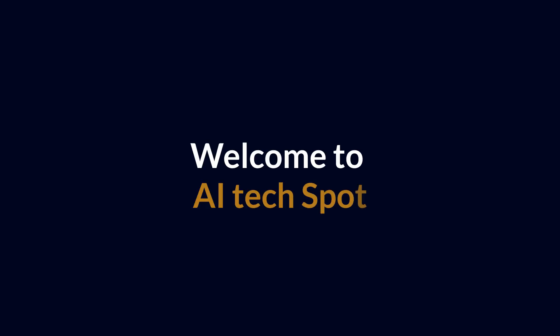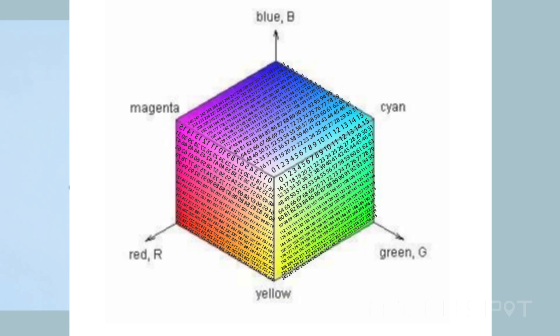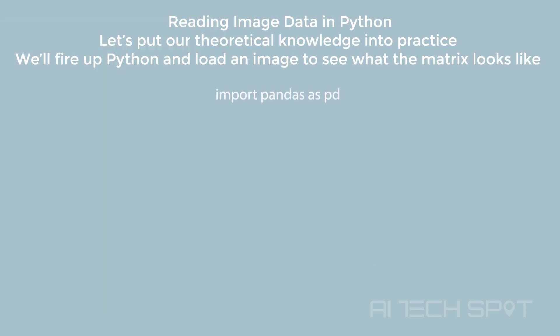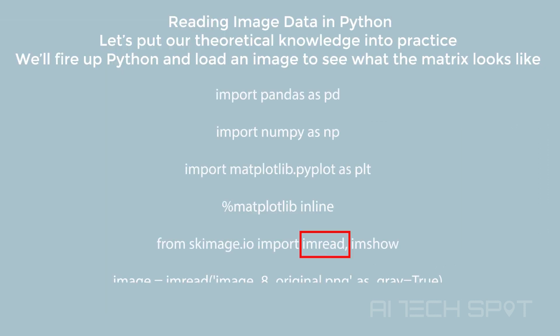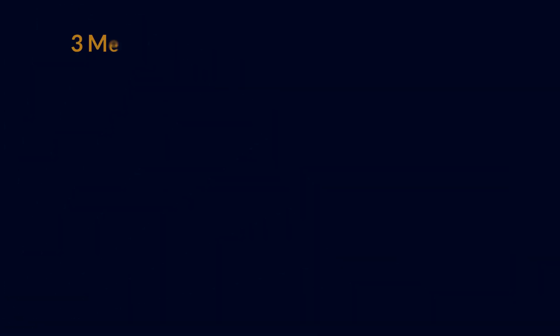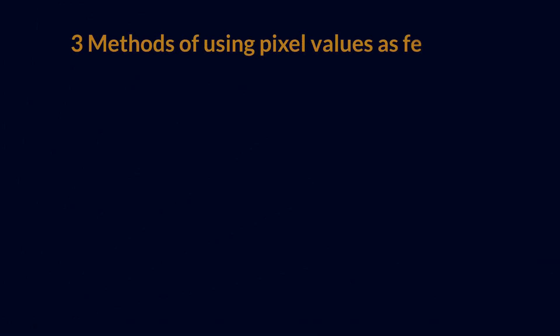Welcome to the AI Tech Spot. In the last video, we saw how the machine stores images, and how Python reads the image. In this video, we are going to see three methods for feature extraction from image data.